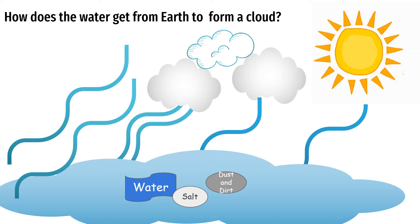Evaporation is the process of water converting from a liquid to a gas. The sun is one of the most important parts of the water cycle — it heats up the water that's in the oceans, the glaciers, and the rivers, and eventually it evaporates and rises up into the atmosphere. Water is also evaporated through plants and soil, which is another process we'll discuss a little bit later. Evaporated water is in the form of water vapor.